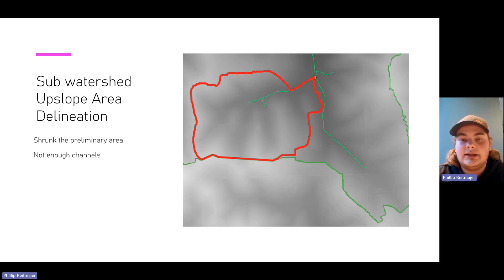I delineated the sub-watershed using the upslope area using an outlet point. This shrunk the preliminary area by about 20 acres and I noticed there was not enough channels which caused me to run the channels and basins program again with a more sensitive stream threshold.